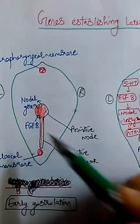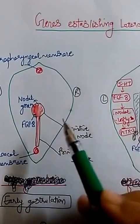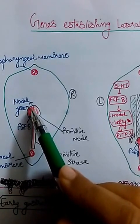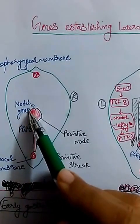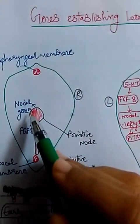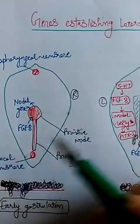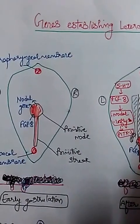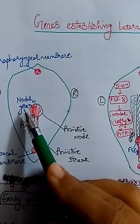There is a gene called fibroblast growth factor 8, FGF8. What it does is it stimulates the primitive node and causes expression of the nodal gene — but only on the left side. The left side is here and the right side is here. Why this whole signaling is along the left side only is not clearly known, although there is a hypothesis explaining it.